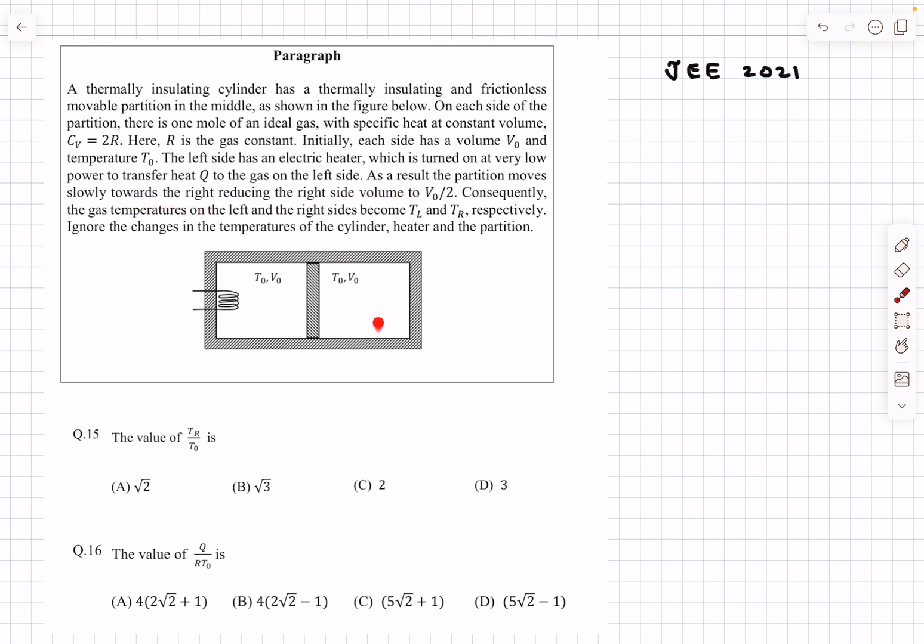In the final situation the right side volume is given to be V0/2. Consequently the gas temperatures on the left and right side become TL and TR. We have to ignore the change in temperature of the cylinder heater and partition.